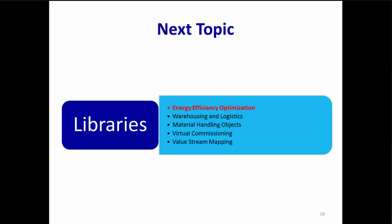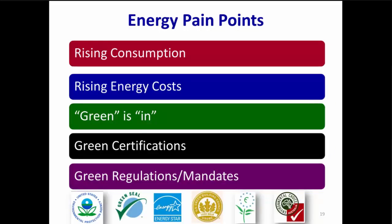Our next topic covers several libraries that you may find useful. We'll start with Energy Efficiency Optimization. Energy pain points include rising energy consumption and costs. Also, green is in with consumers and regulators. Additionally, green certifications like the Energy Star Seal and EPA regulations and mandates are becoming more important.